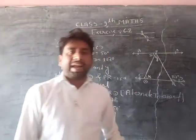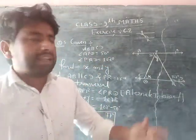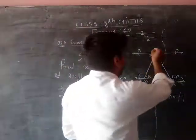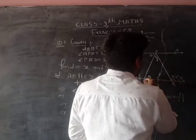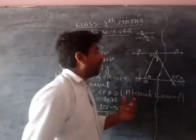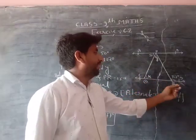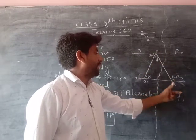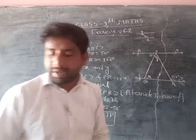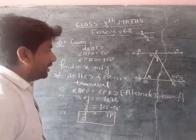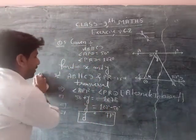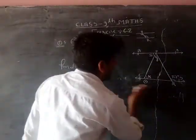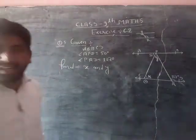Now if you have to find x's value, then angle sum property will apply. Before that you have to find angle PRQ. And you will see that this line is CD, and here angle PRD and PRQ are forming a linear pair. Now y is equal to 77 degrees. Clear.